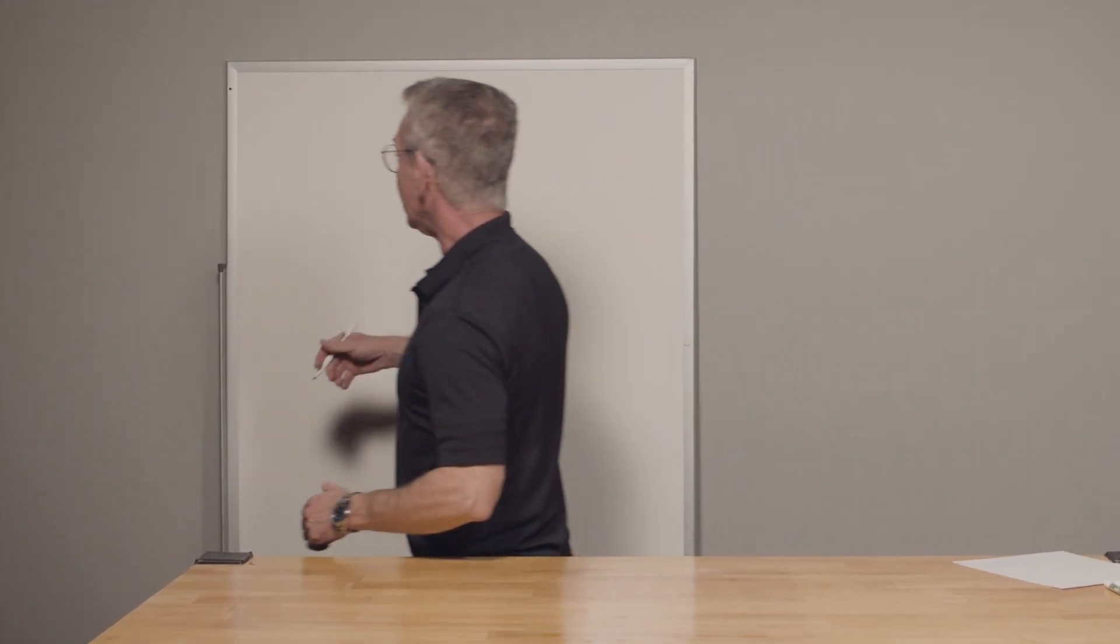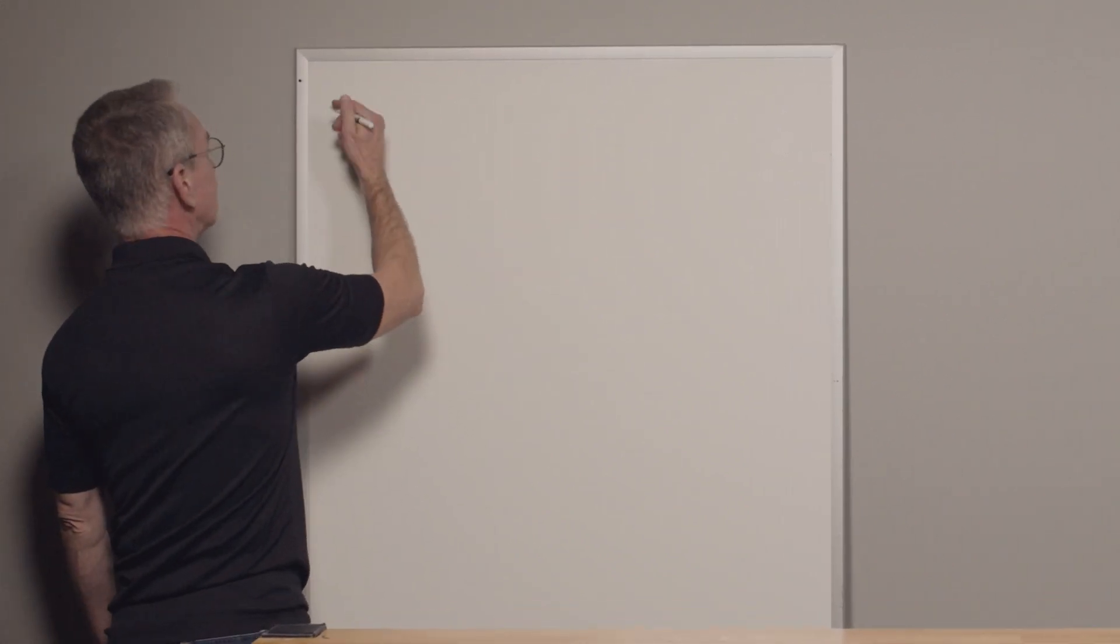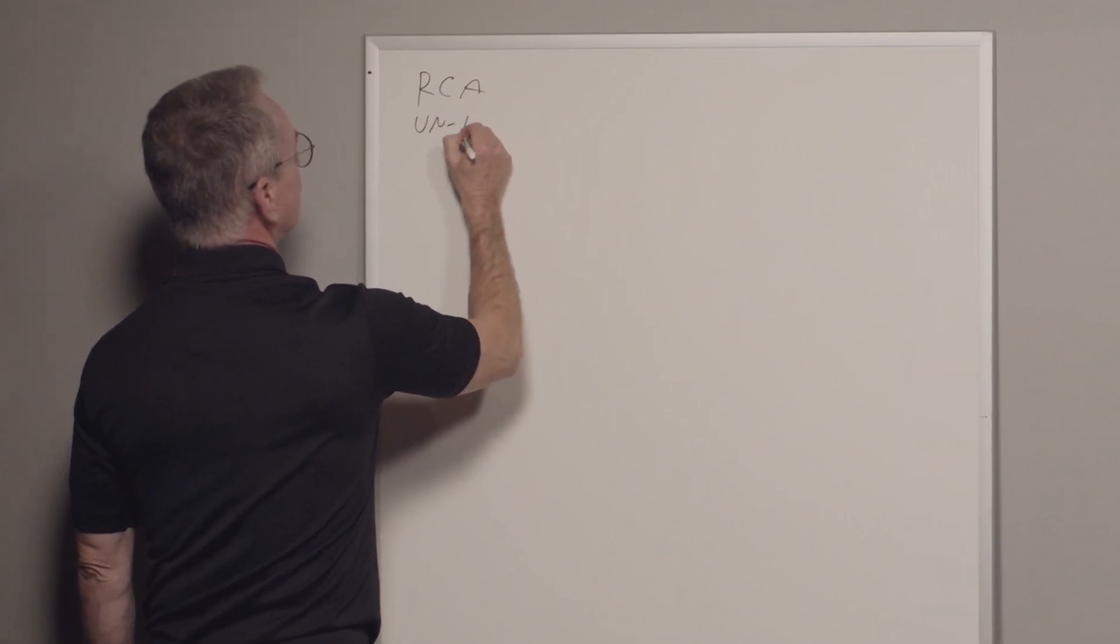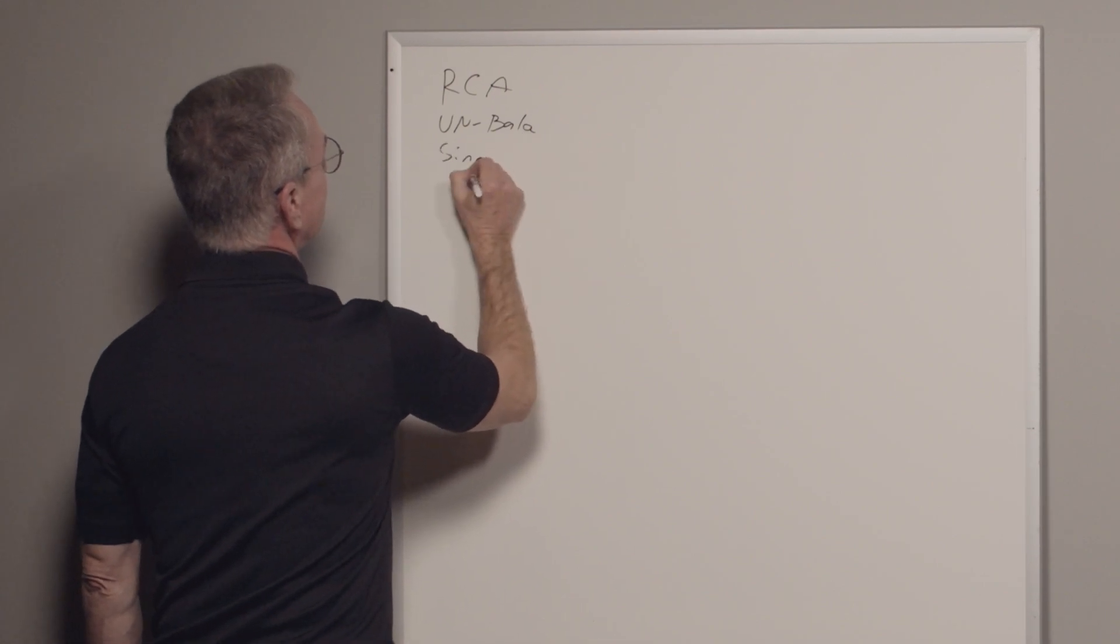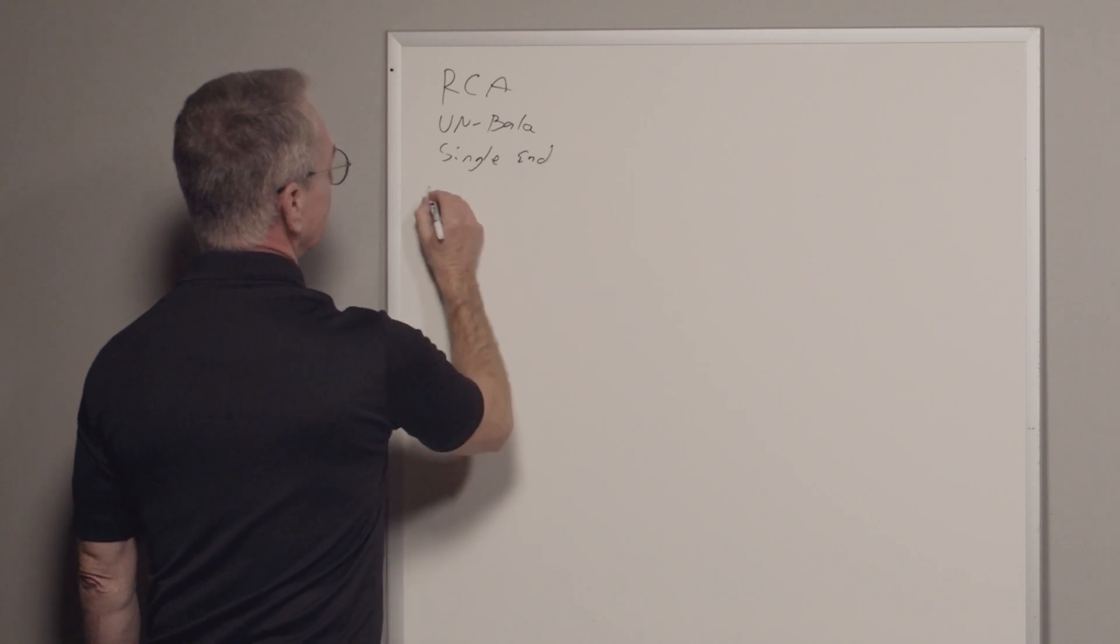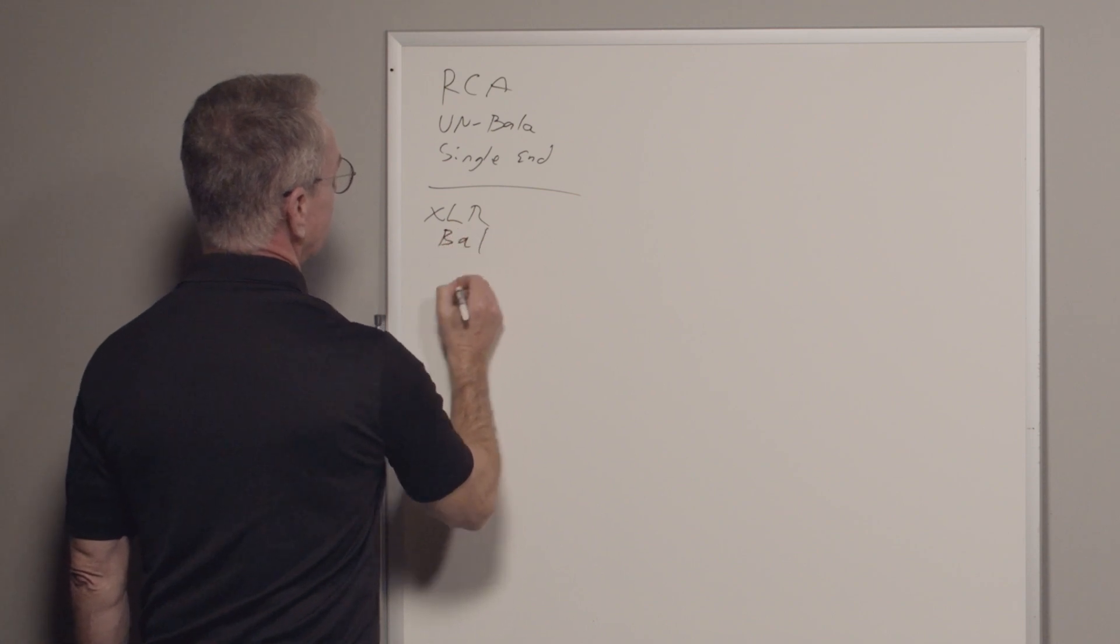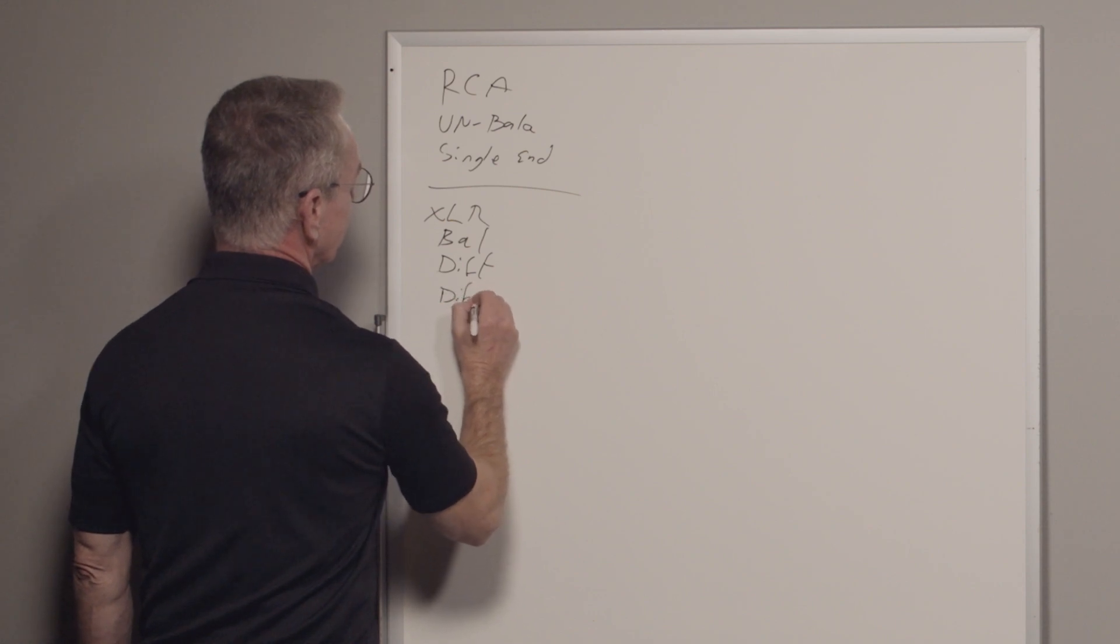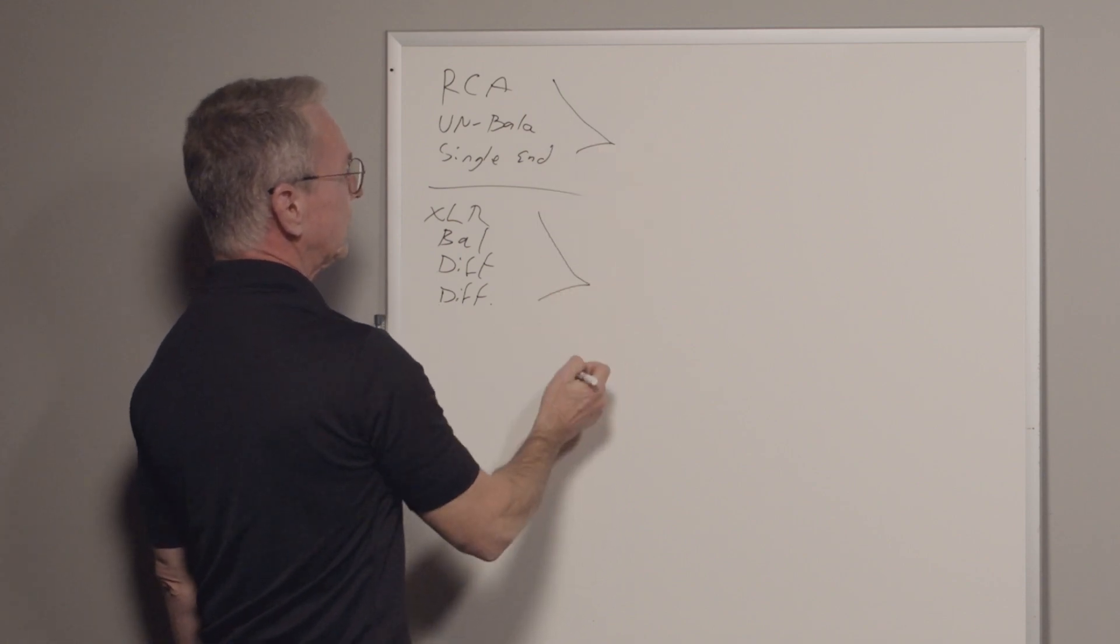So first off, what do you hear all the time? Well, you got RCA, you got unbalanced, you got balanced, you got differential, single-ended, so let's just make a list. RCA, unbalanced, single-ended. Down here, what do we got? XLR. Let's go to the counterparts. Balanced, differential, and differential reference. What do they mean? These are all interchangeable. They all mean the same thing.